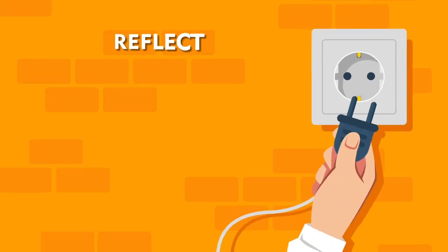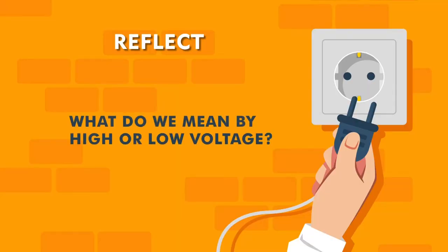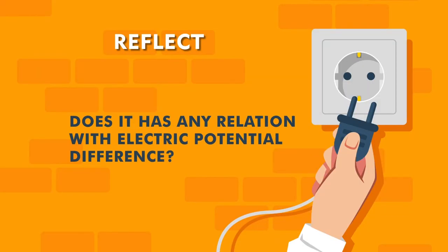To connect this concept with daily life, ask students what they know about voltage. At home, we often hear 'today the voltage is high' or 'the voltage is low — the AC is not working properly.' Do they have any idea what this voltage means? They may not have the scientific concept, but they know that voltage is a concept which determines the flow of current. Ask them: if the functioning of an instrument is related to voltage, does it have any relation with electric potential difference? Raise questions, let them reflect, think, and explore.